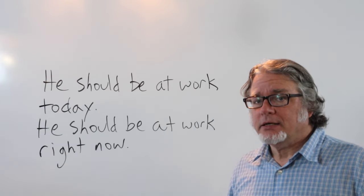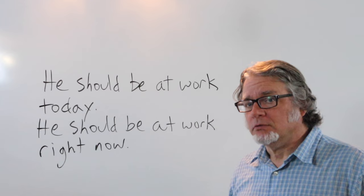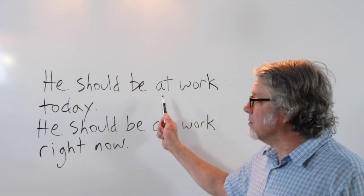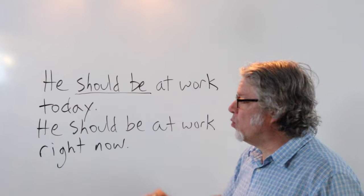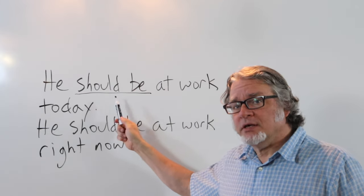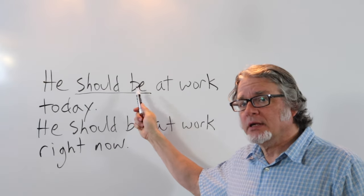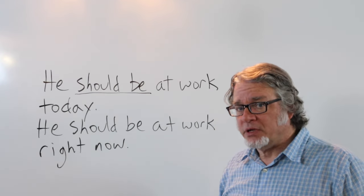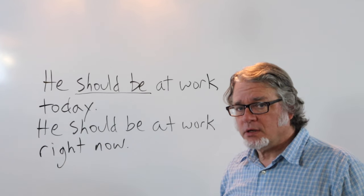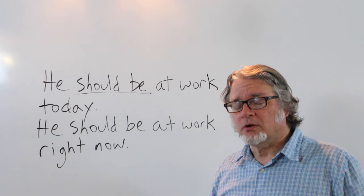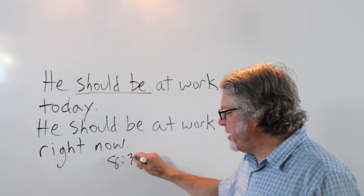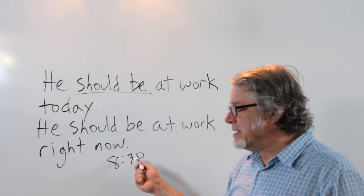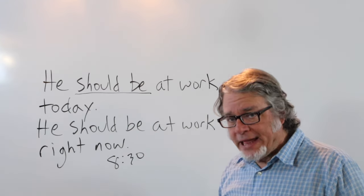He should be at work today. He should be at work right now. In this case, he should be at work today, this is the responsibility of a person to be at work. And in this case, it's possible he is not at work, but it's his responsibility to be at work. In this sentence, he should be at work right now, it's 8:30 and normally he starts work at 8 o'clock. Then he should be at work right now because he's always at work at 8:30.